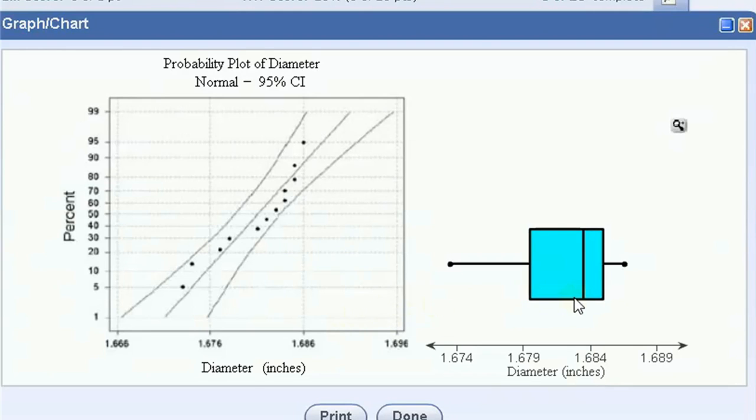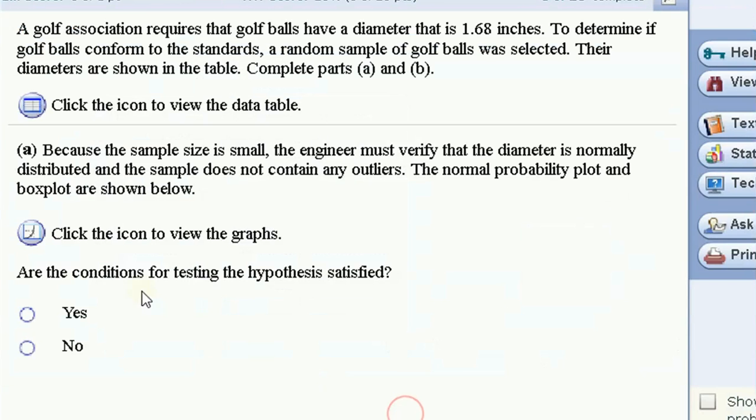Now, the box plot doesn't indicate any outliers. It's a skewed distribution for sure, but whether or not there's anything that is going to cause us alarm. In the normal probability plot, all of the data points are within the bands here. Let's just say this is fine. I would say that the conditions are fine.